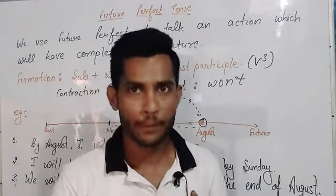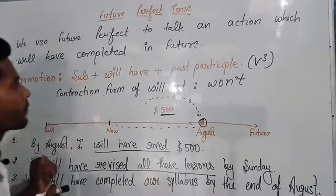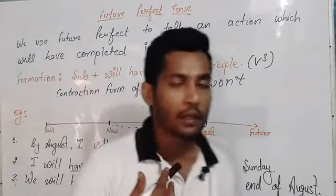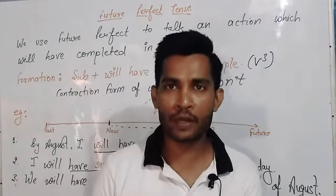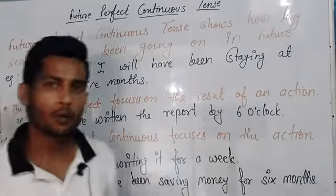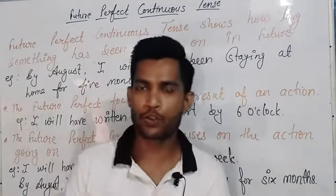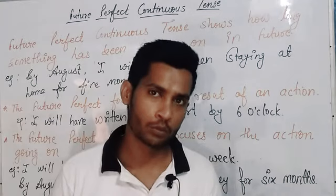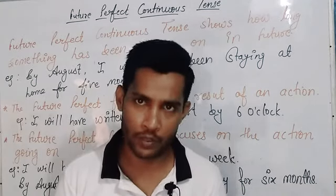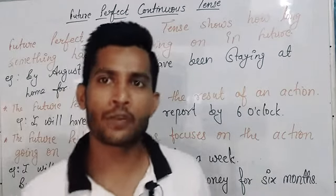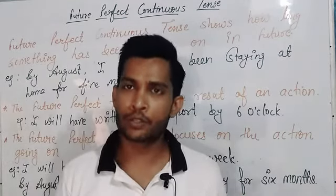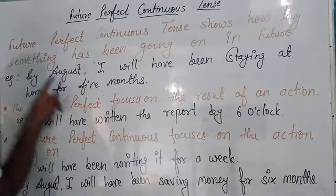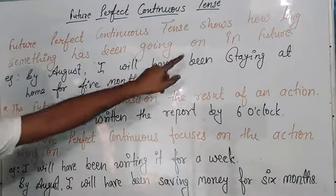Now we are going to discuss future perfect continuous tense. There is a little bit of difference between future perfect and future perfect continuous tense. The main difference: 'perfect' means completion of an action, but 'continuous' means the running of an action.